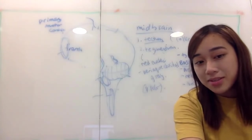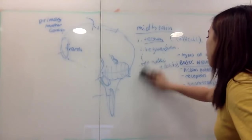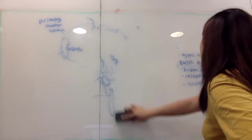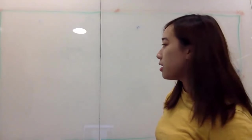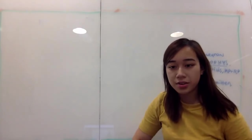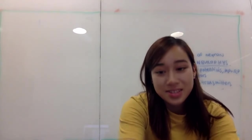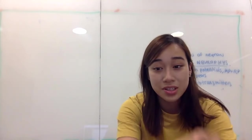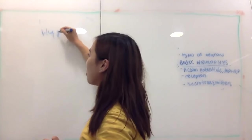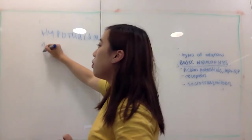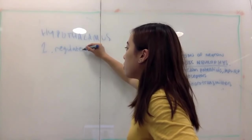Does anyone know what the hypothalamus does? It regulates hormone production, especially by the pituitary gland. The pituitary gland is known as the 'master gland,' but the real master is the hypothalamus. It also regulates body temperature — that's how you start feeling cold or hot — and it regulates sleep, which is a whole chapter in the state round.